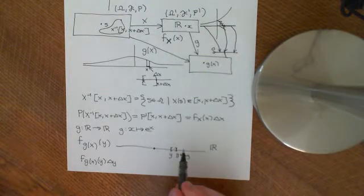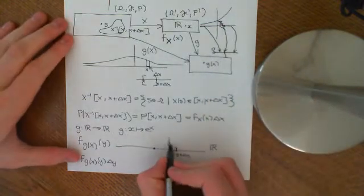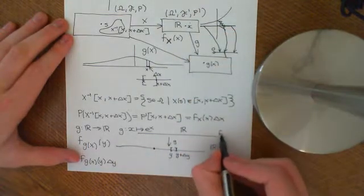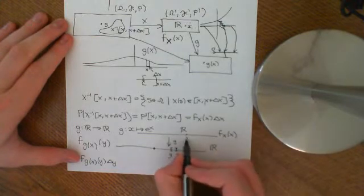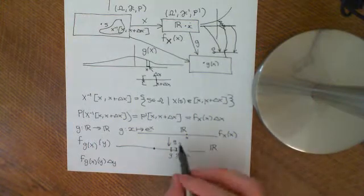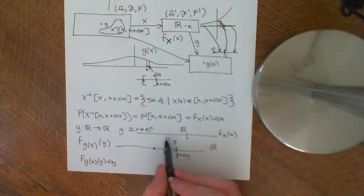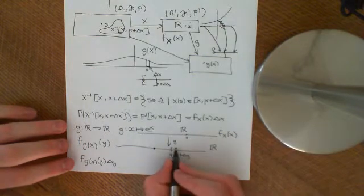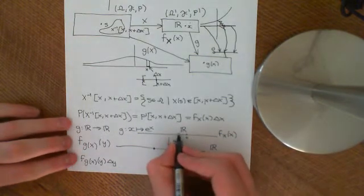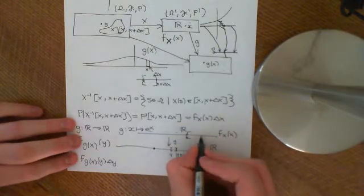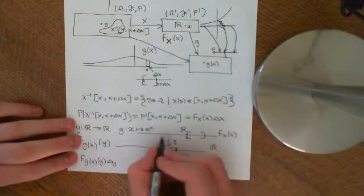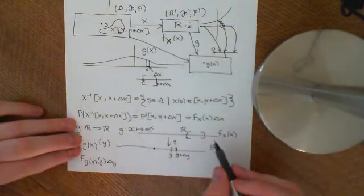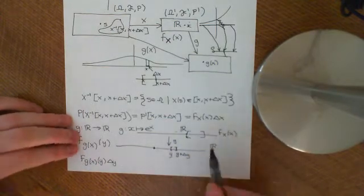What we now need to do is look at this transformation g. We've got this function g mapping from another real line — on which we know the probability density function. So if you give me a little x, I know what the probability density function at that little x is. We want to use that PDF along with this transformation g to work out what the PDF should be here. We can do that by taking the pre-image of this little interval — if we can work out a little interval in the domain and compute the probability of that interval, then we're in business.